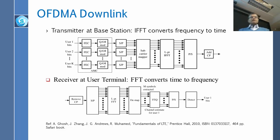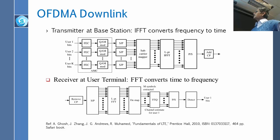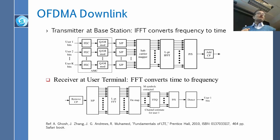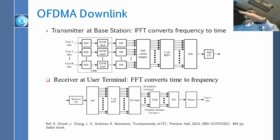The way OFDMA works — I have not shown you this diagram, which is important to understand how it is implemented inside. At the base station, these bits are going to user one, these bits to user two, these bits to user k. Each user's bits go through coding — FEC, forward error correction coding — where we add more bits so that if something happens we can correct it. After that, we do QAM modulation, deciding whether it is 64 QAM or 16 QAM for each user. Every user has a different modulation.